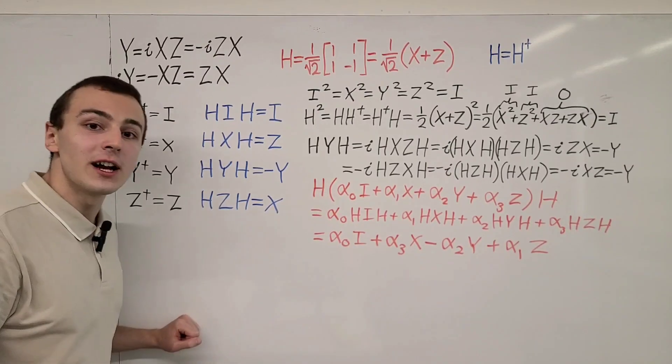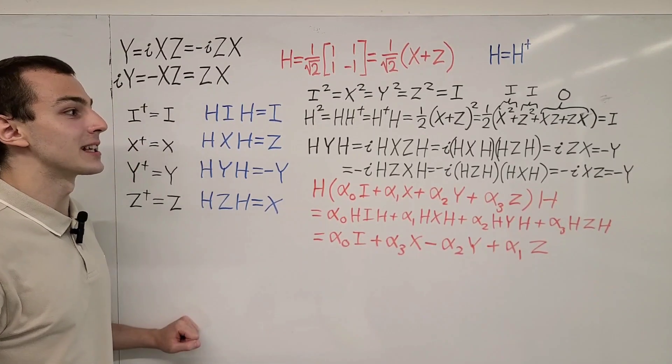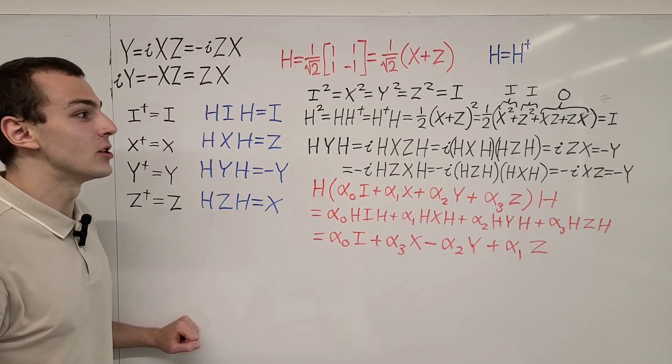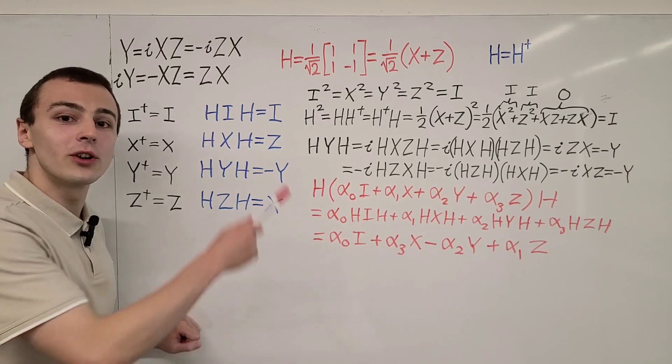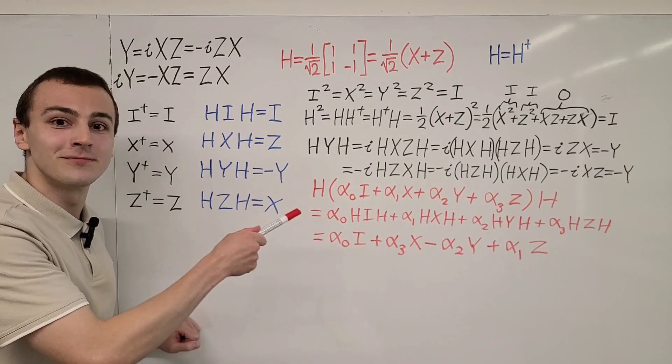We're going to be using these properties in later videos in the quantum mechanics playlist. These are essential properties of the Hadamard gate — translating X's into Z's and Z's into X's — which is useful in quantum computing and quantum information in general.